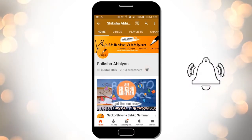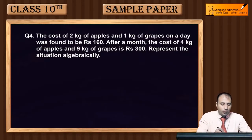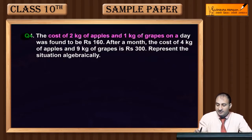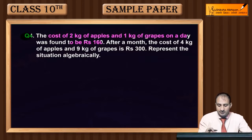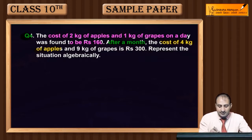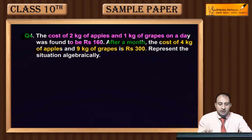The fourth question: the cost of 2 kg apples and 1 kg grapes on a particular day was rupees 160. After a month, the cost of 4 kg apples and 9 kg grapes became rupees 300. We need to represent this situation algebraically.